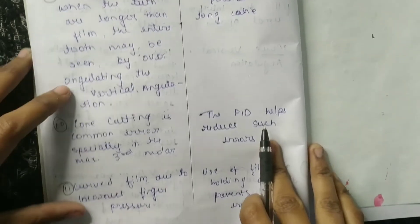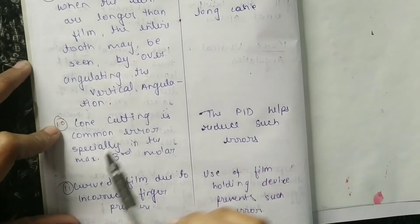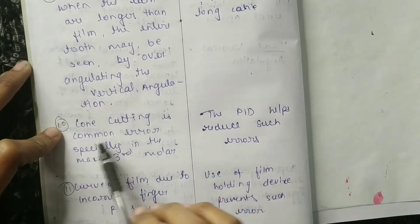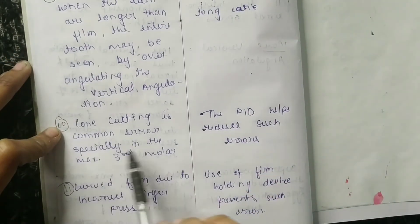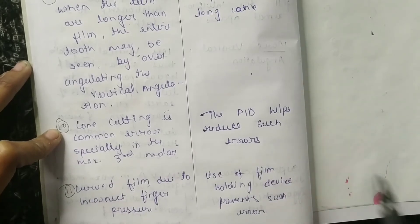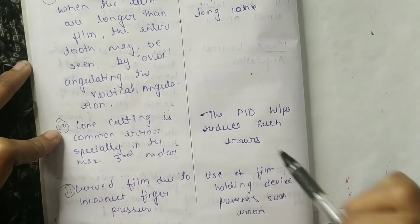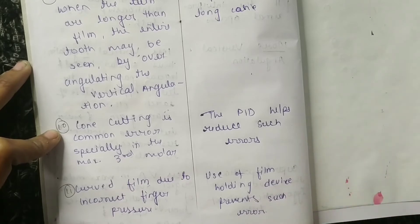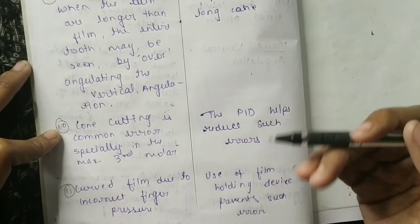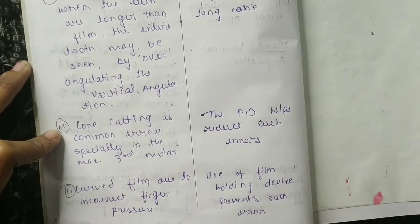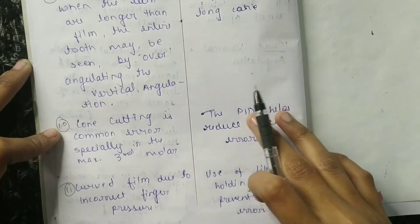The tenth difference is cone cutting, which is a common error especially in the maxillary third molar region. In long cone technique, the PID helps to reduce such errors, so we get fewer cone-cutting errors in long cone technique.